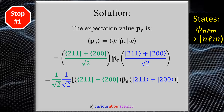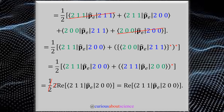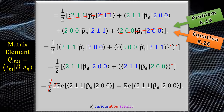In step one, we set the stage: with the expectation value setup we've seen before, we plug in the corrected non-typo mixed state and simplify by distributing. After distributing the bra and kets, we see that two matrix elements cancel via Laporte's rule. This is the definition of the matrix element, and thus we apply equation 6.26, which we set up in problem 6.13.